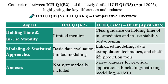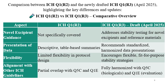Regarding modeling and statistical approaches, basic data evaluation with limited modeling was available earlier. Now Q1R3 has enhanced modeling, data extrapolation techniques, and shelf life prediction tools. Previously, annexures were not systematically included; now three annexures cover practical applications — bracketing, matrixing, and modeling. ICH Q1R2 did not specifically cover novel excipients, but the draft guideline addresses stability testing of novel excipients and reference materials.